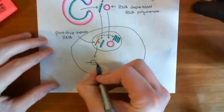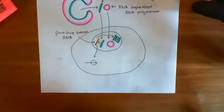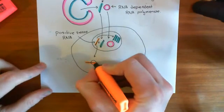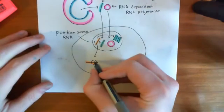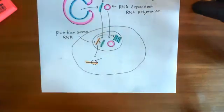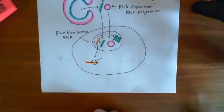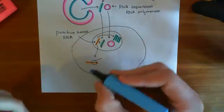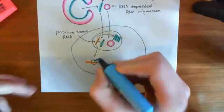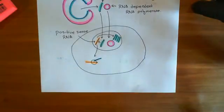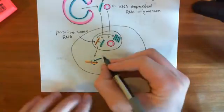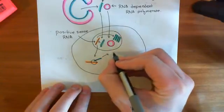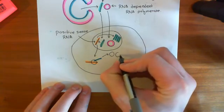The positive sense viral RNA comes in, and the host cell's ribosomes are just going to make the proteins for these viral positive sense RNAs. What sort of proteins are you going to make? Well, firstly, you're going to make more copies of this RNA-dependent RNA polymerase.